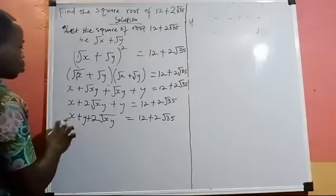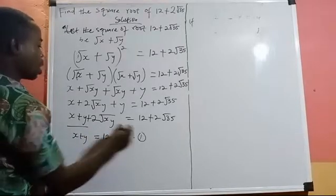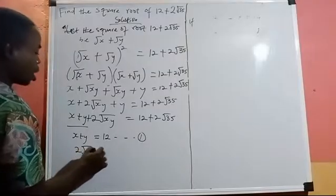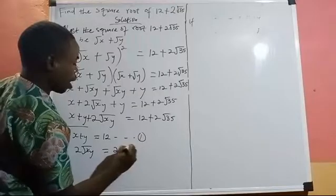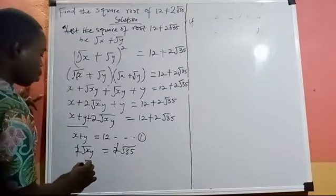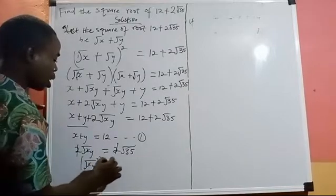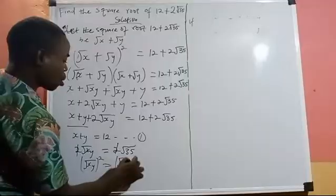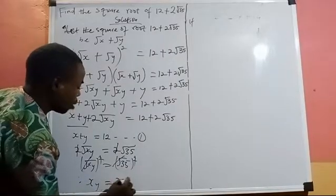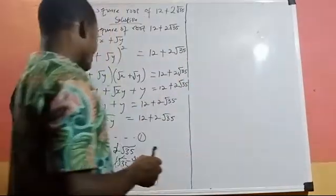Applying the rule, we get two equations. Equation 1: x + y = 12. For the surd part: 2√(xy) = 2√35. We divide both sides by 2, then square both sides to eliminate the square roots, giving us equation 2: xy = 35.